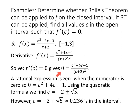Setting the derivative equal to zero: a rational expression equals zero when the numerator equals zero, so we solve C squared plus four C minus one equals zero. Using the quadratic formula, C equals negative two plus or minus the square root of five. However, negative two minus the square root of five is not in our interval, so it's not valid. Negative two plus the square root of five, approximately 0.236, is in the interval — this is the only C value to report. Use the exact value unless the problem asks you to round.